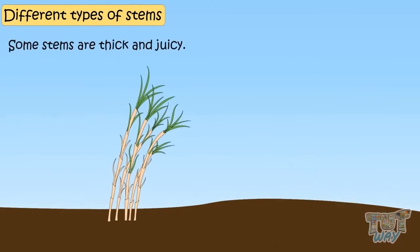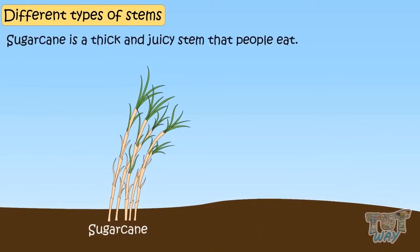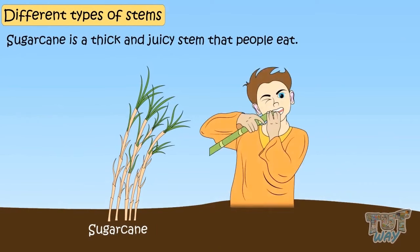Some stems are thick and juicy. For example, sugar cane. Sugar cane is a thick and juicy stem that people eat.